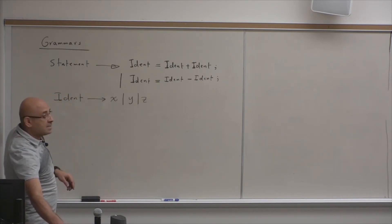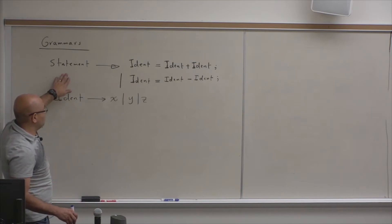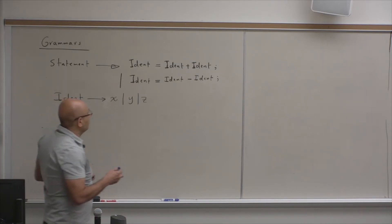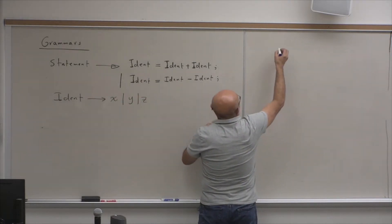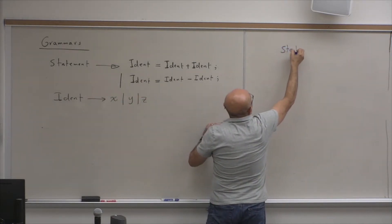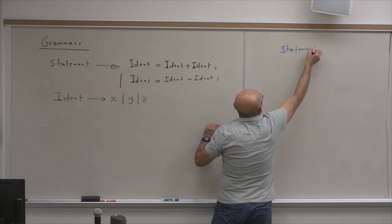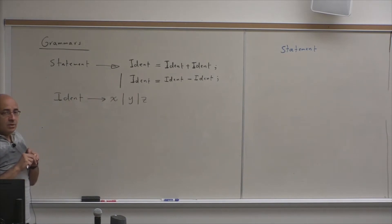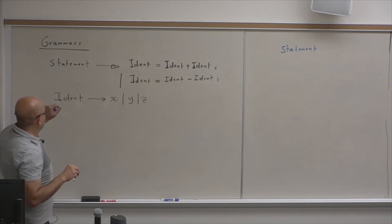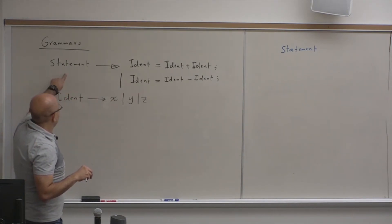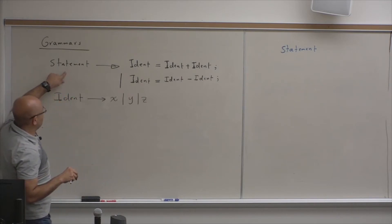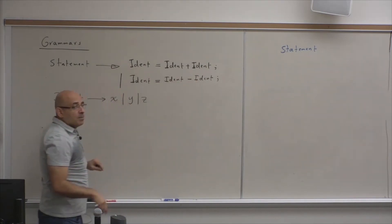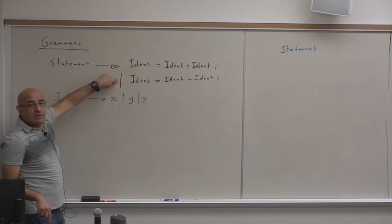So this is a rule. It defines the statement as IDENT equals IDENT plus IDENT, or IDENT equals IDENT minus IDENT, where an identifier is x, y, or z. We can derive from this by substitution. Deriving means making substitutions to derive specific strings. What can we substitute for a statement? We have two options.